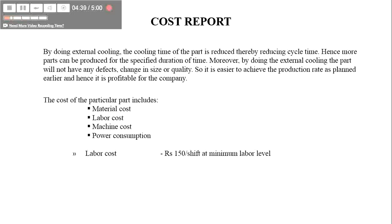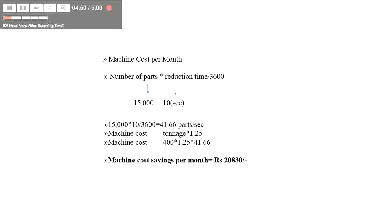This is the cost report. There are four types of costs: material cost, labor cost, machine cost, and power consumption. The total number of parts is 15,000.